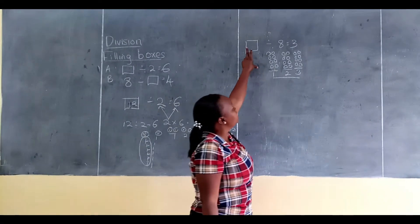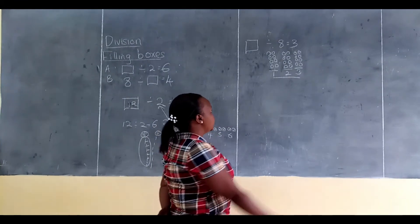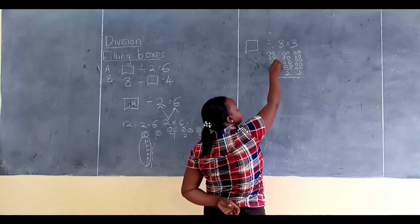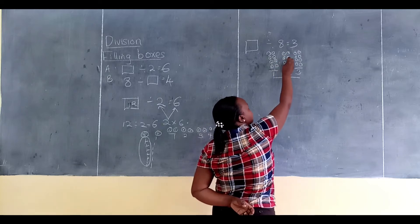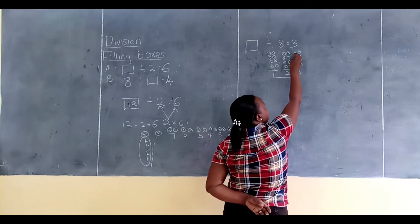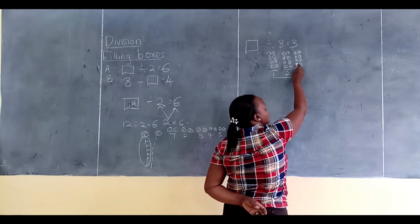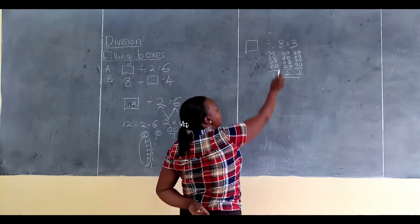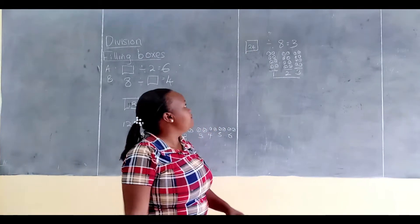For me to get the missing number in the box, I am going to count all my balls. So let's count together: 1, 2, 3, 4, 5, 6, 7, 8, 9, 10, 11, 12, 13, 14, 15, 16, 17, 18, 19, 20, 21, 22, 23, 24. So there I have my answer — my missing number here is 24.